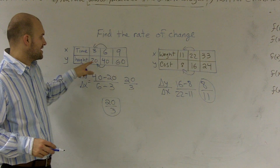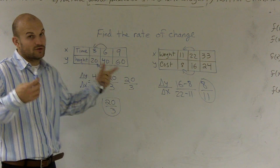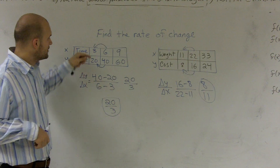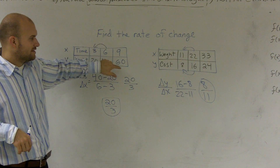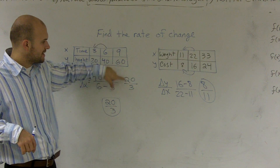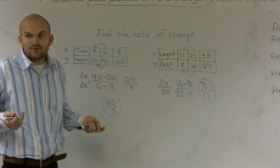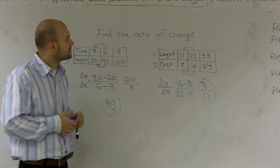I could have done 16 minus 20 and 9 minus 6 and still would have got the exact same rate of change. But then you just subtract them, find their values, and write them as your ratio. And that's all rate of change is — it's just a ratio.